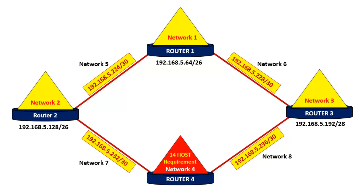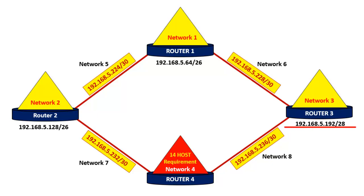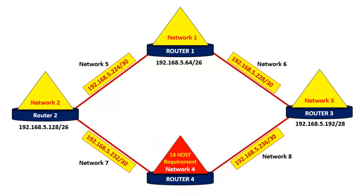In my last video on VLSM, at the end I had asked you one simple question. According to this diagram, network number 1 is mentioned as 192.168.5.64 with the CIDR value /26. Network number 2 IP address starts from 192.168.5.128 with the CIDR value /26. Network number 3 IP address starts from 192.168.5.192 with the CIDR value /28. The IP address of all the networks are given, but only the IP address of network number 4 is not given and we have to find that particular address. According to this diagram, the requirement of network number 4 is 14 hosts. Now I am going to explain how to find that IP address, so watch this video till the end.